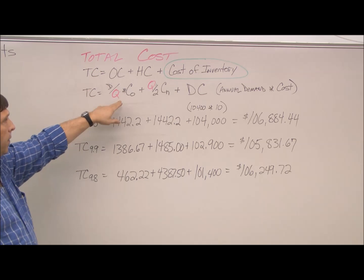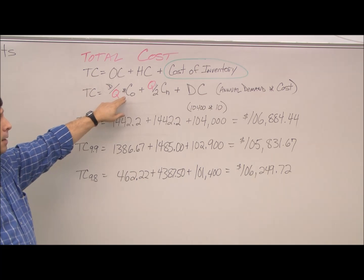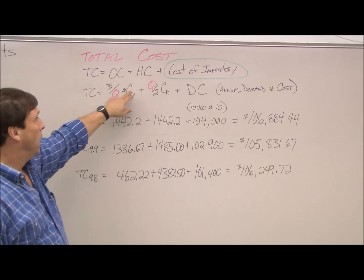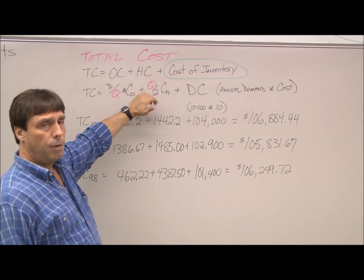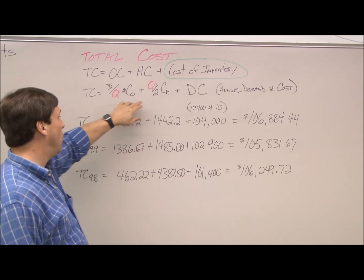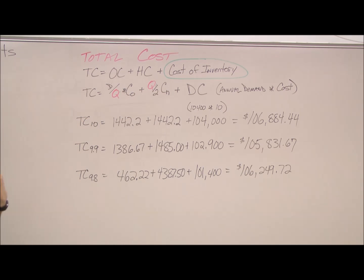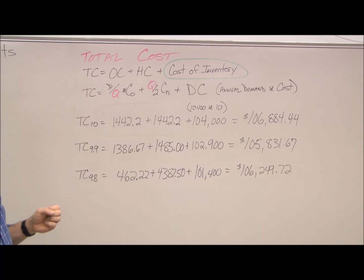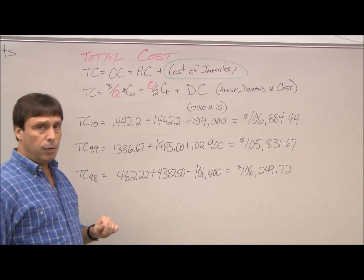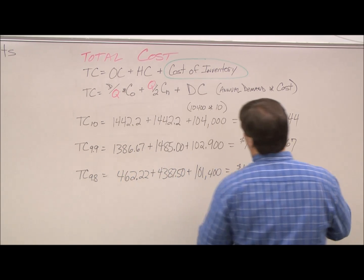Our typical formula: our ordering costs are D divided by Q times the cost per order. Our holding cost is our average inventory, which is Q divided by 2 times the cost to hold. I've highlighted the Qs in red, just to emphasize that we use the adjusted Qs. We do not use the EOQ calculation. Remember, for 9.9 and 9.8, we had to go to the minimum order quantity to get the quantity discount. That's what we use for the Q here.